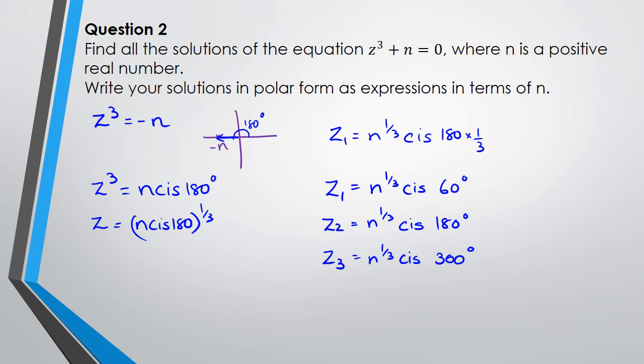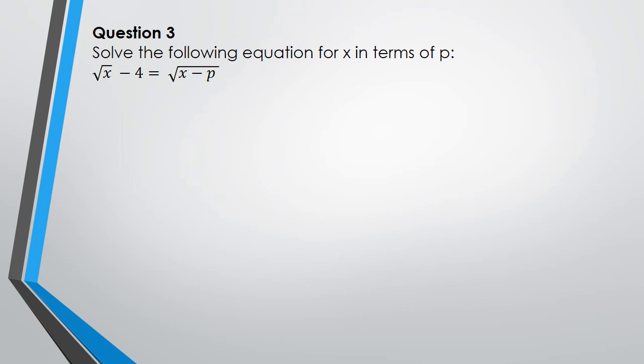Okay, next question. Solve the following equation for x in terms of p, so we need to rearrange x in terms of p. In this case, I need to get rid of the square root symbol, so to get rid of the first square root symbol, I'm going to square both sides.